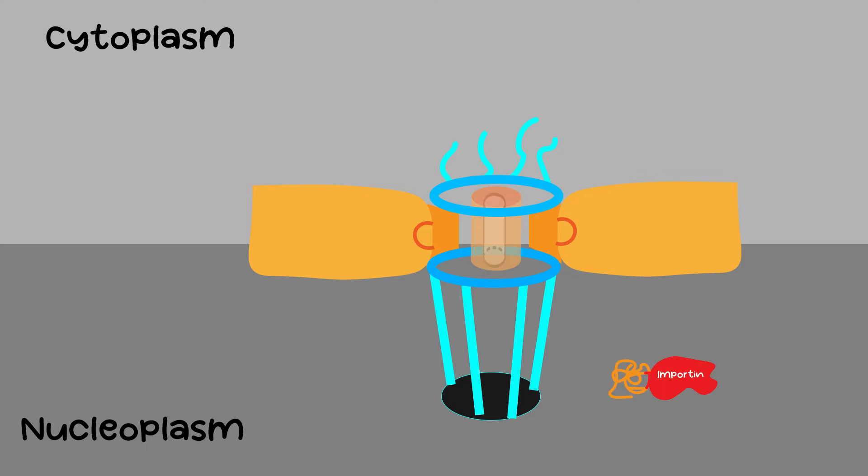On the other side, the complex is disrupted by a protein called RAN carrying a molecule of GTP. This protein binds to the importin and changes its structure, making it release the cargo.